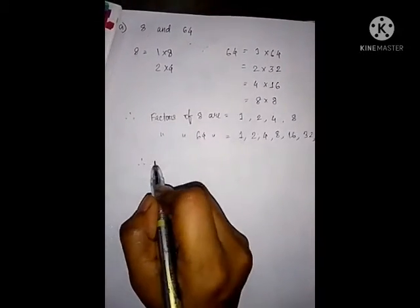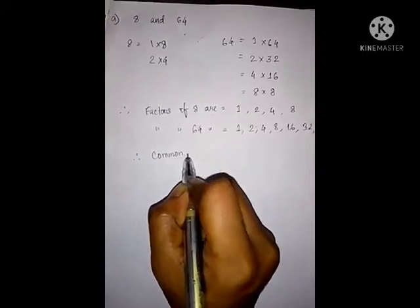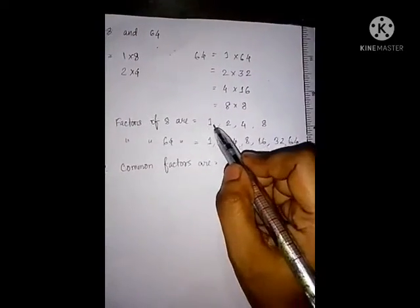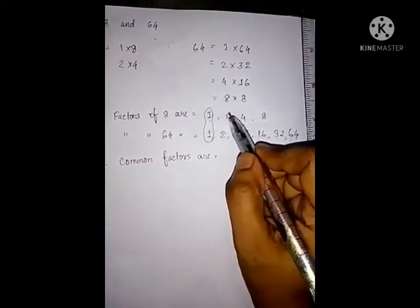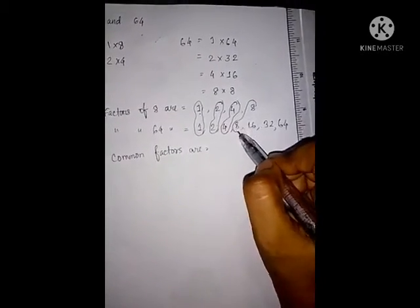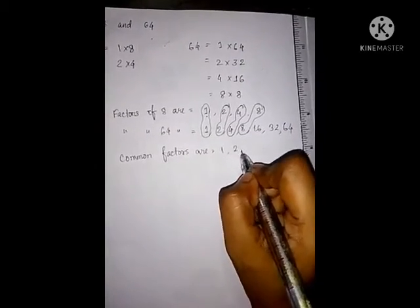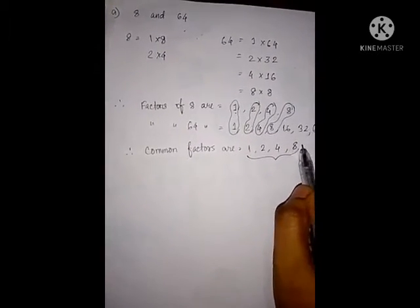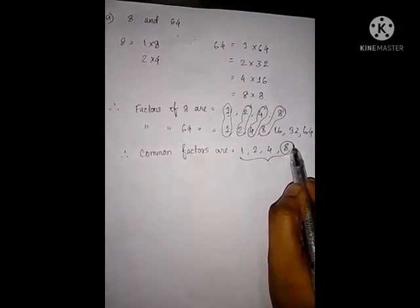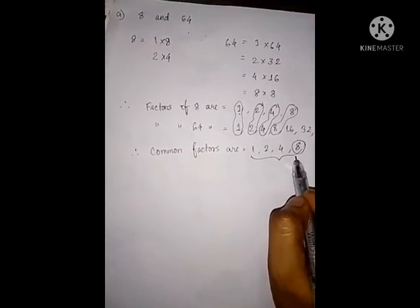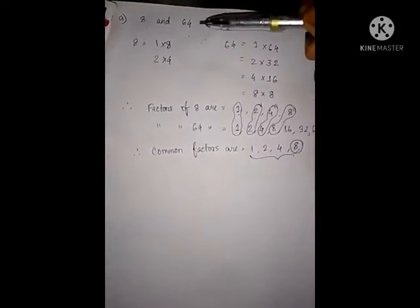Therefore, the common factors between 8 and 64 are: 1 is common, 2 is common, 4 is common, and 8 is common in both numbers. So the common factors are 1, 2, 4 and 8. Among these numbers, which is the greatest? The greatest number is 8.